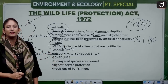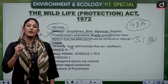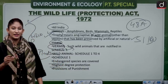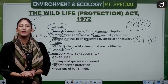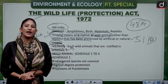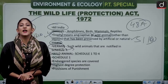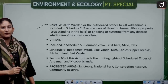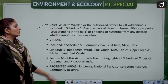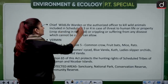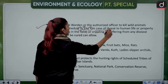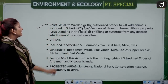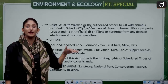Wild animals under Schedule 1 of the WPA get the highest amount of protection — these are the most endangered species. Provisions for punishment for harm done to wildlife are also included under this Act. The Chief Wildlife Warden or authorized officer may permit killing of wild animals under Schedules 2, 3, or 4 in case of threat to human life, property, standing crops, or if the animal is crippled or suffering from an incurable disease.